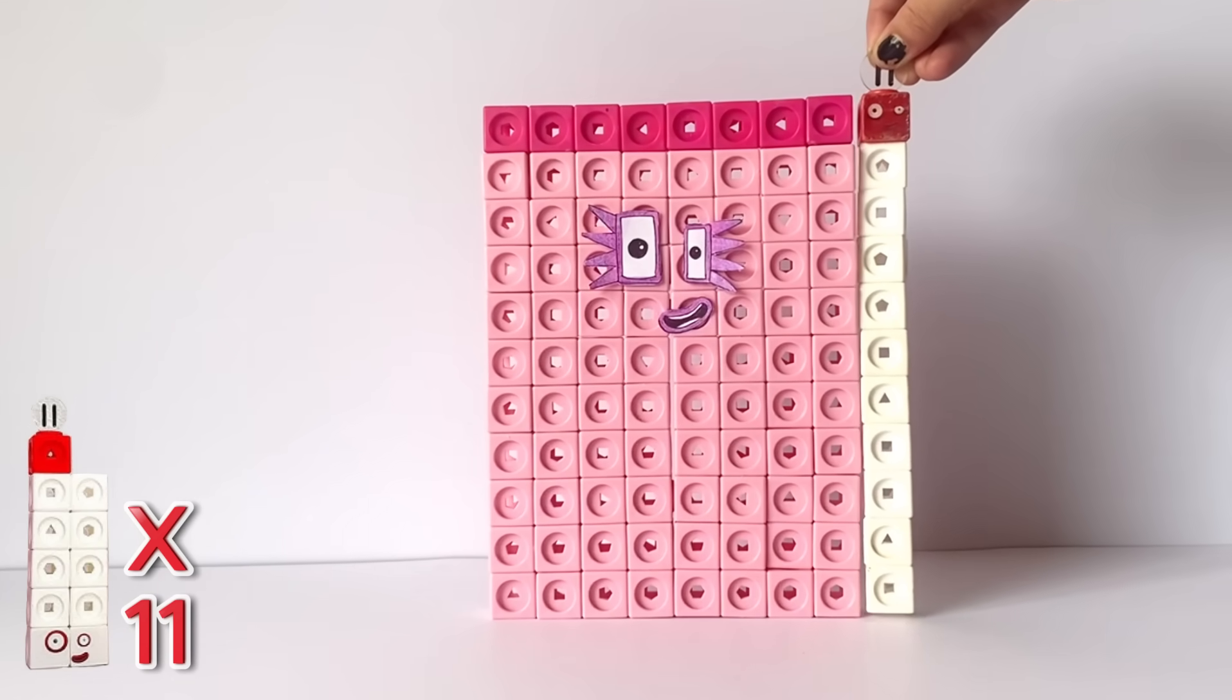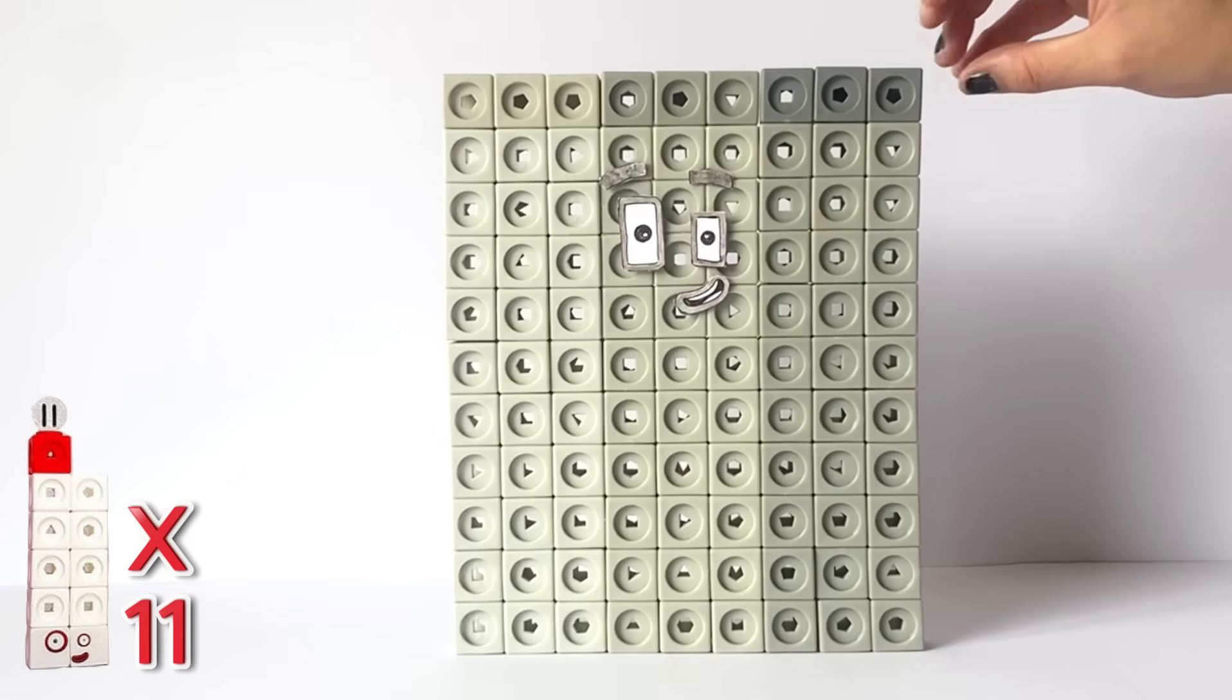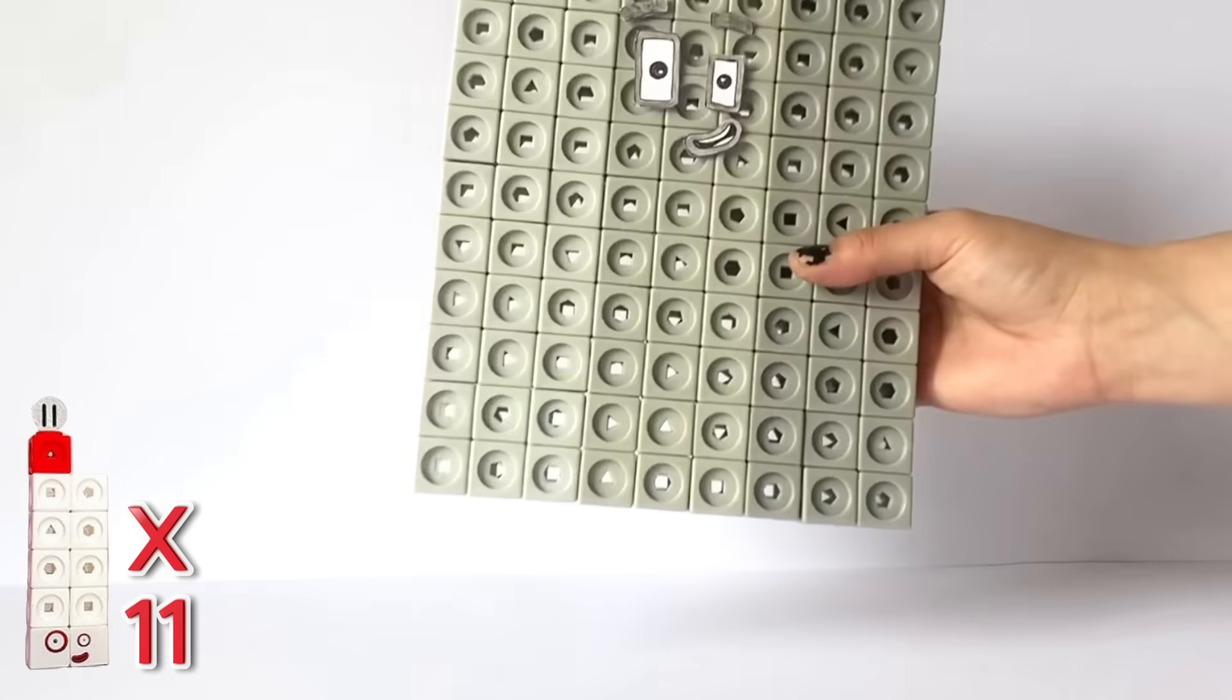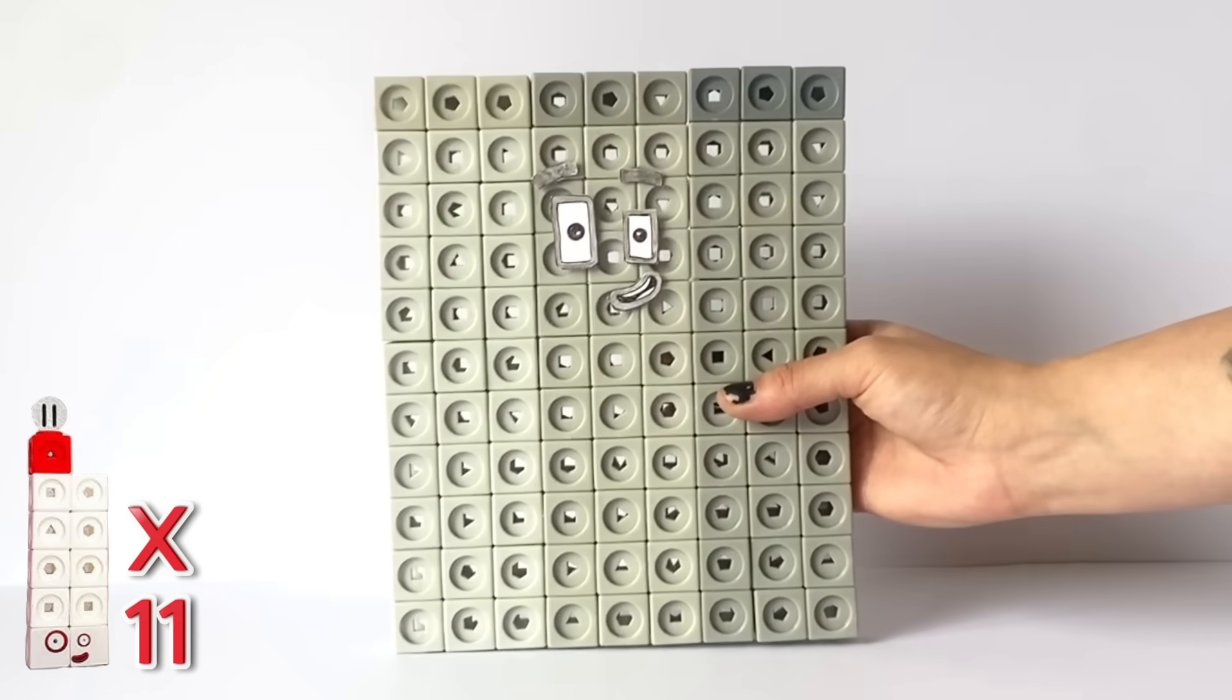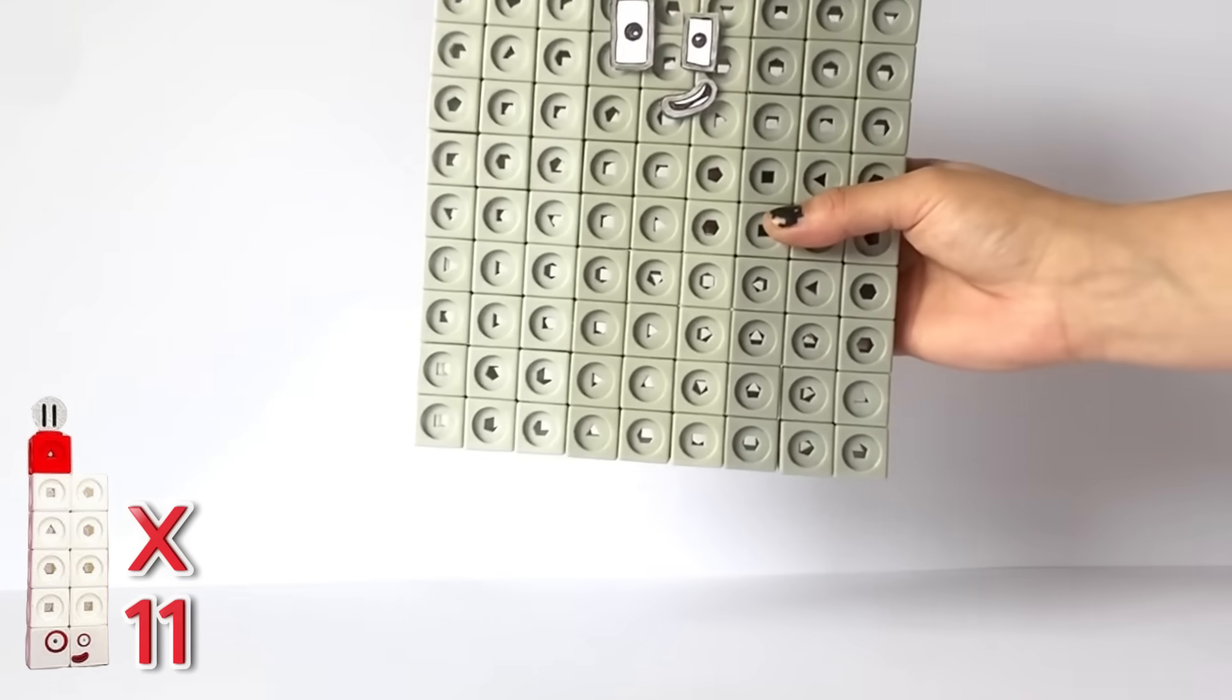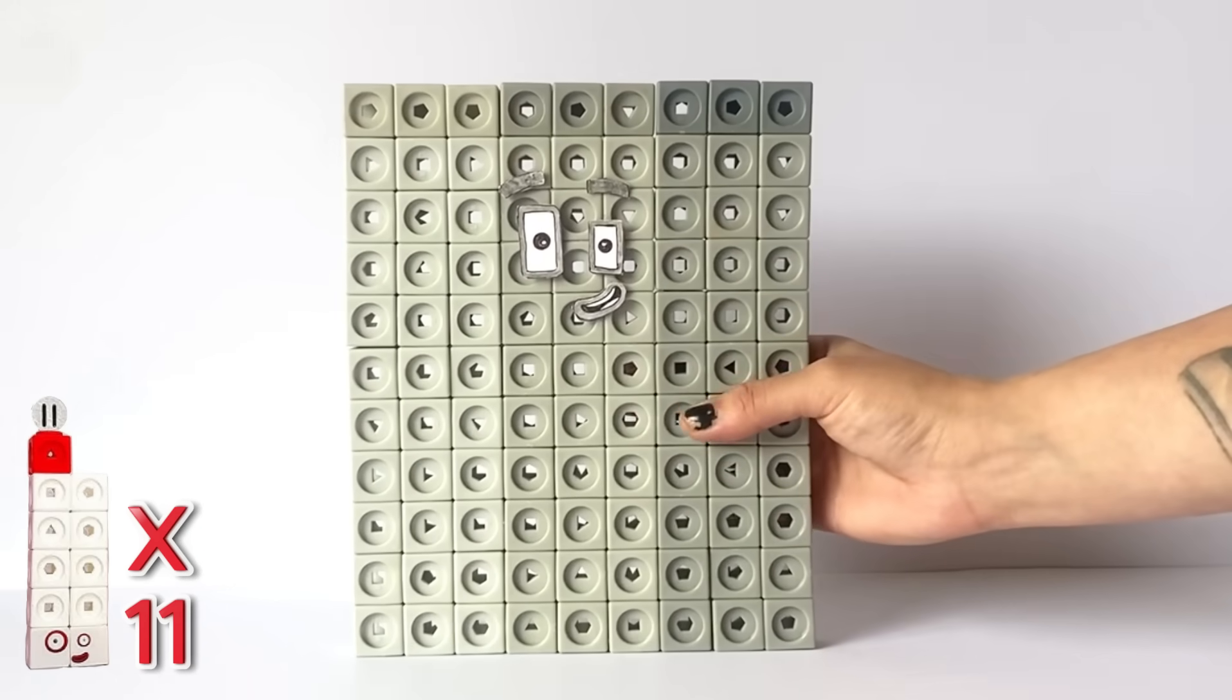Next is 9 times 11 equals 99. NumberBlock 99 also has one eye bigger than the other just like most of the 11 times table members. However, 99's are grey to represent the 9 and number 90.